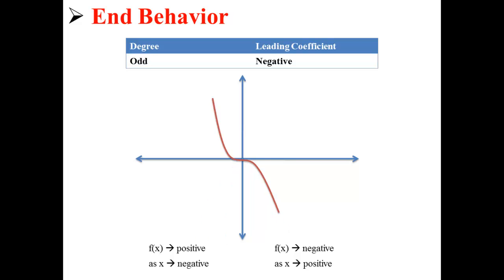If you have an odd degree and a negative leading coefficient, then as x approaches negative infinity, f of x approaches positive infinity. And as x approaches positive infinity, f of x approaches negative infinity, as shown in the graph above.